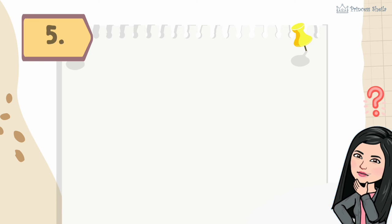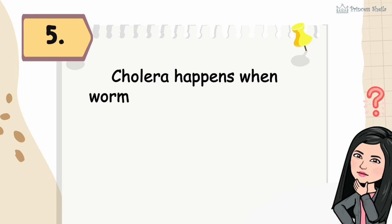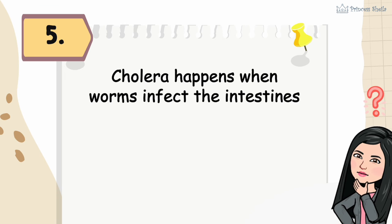Five: cholera happens when worms infect the intestines and other parts of the body.